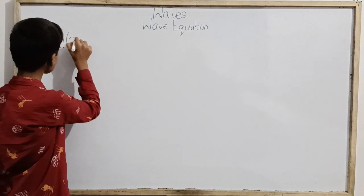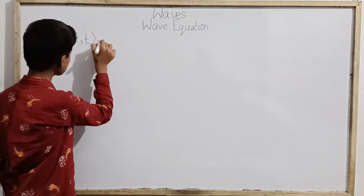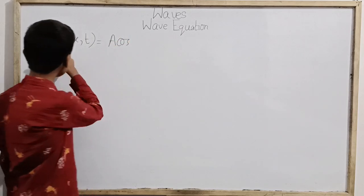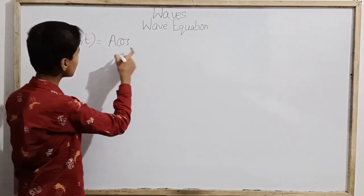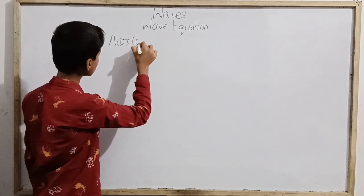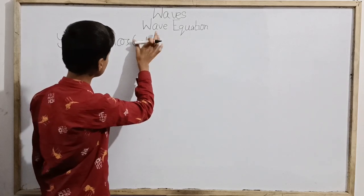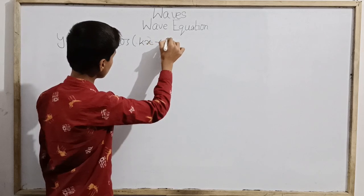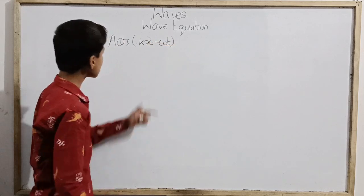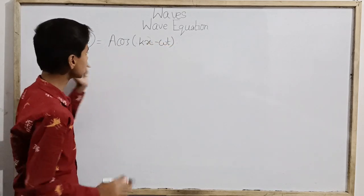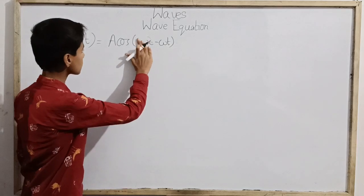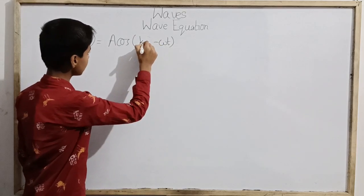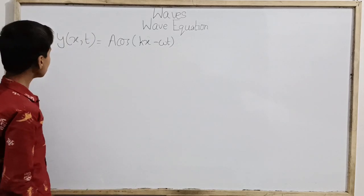For this derivation, we have the wave function of x and t: y = a cos(kx − ωt). We are going with the cosine function.